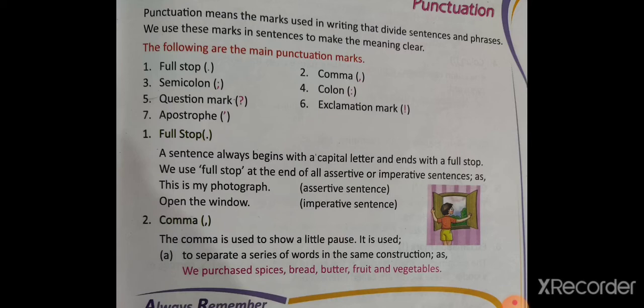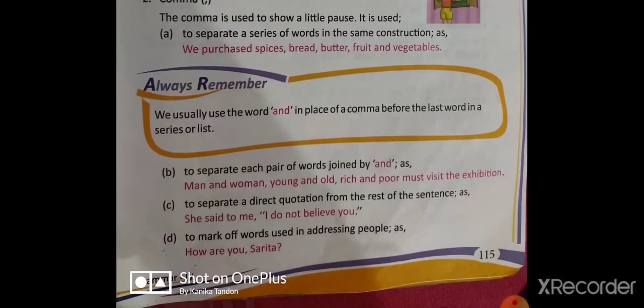Next is comma. Comma is used with the things that we are listing. If we are using many things in a sentence, we use comma to divide them. For example: we purchased spices, bread, butter, fruit and vegetables. We put a comma between them so that it is easy to differentiate. Also, to separate each pair of words joined by 'and' — men and women, young and old, rich and poor must visit the exhibitions. Similarly, to separate a direct quotation from the rest of the sentence, and to mark off words used in addressing people, as in 'How are you, Sarita.'